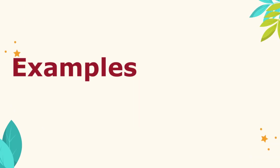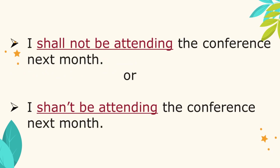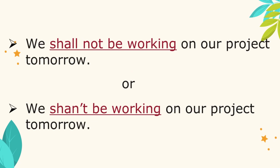Examples of the Future Continuous Tense in the negative are: I shall not be attending the conference next month, or we can say, I shan't be attending the conference next month. We shall not be working on our project tomorrow, or we shan't be working on our project tomorrow.